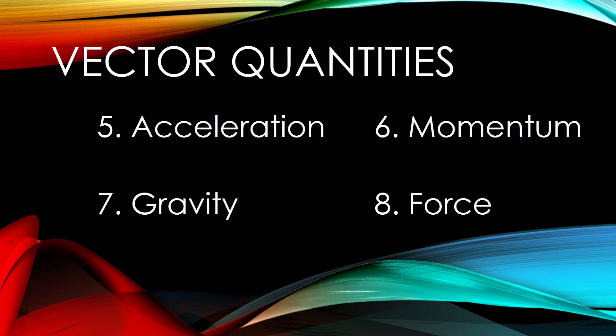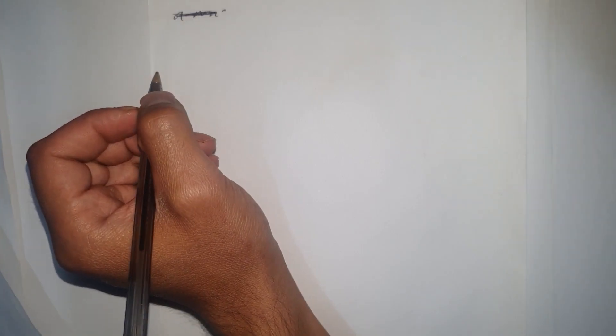Momentum is a vector quantity because it has magnitude along with direction. Momentum refers to a quantity of motion that an object has. If an object is in motion, it has momentum. Momentum increases when either mass or velocity increases, and momentum equals mass times velocity.